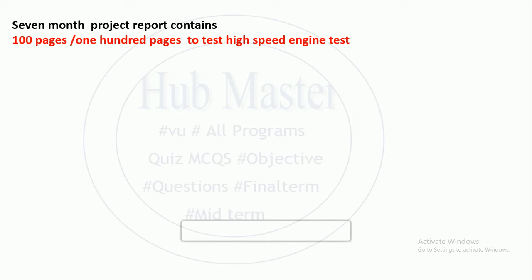This is a short question and these are MCQs. The report says that there is a 100-page report and you can go to the high speed engine test. Where does the project start? 100 pages.